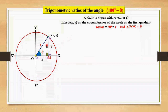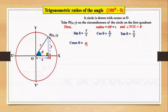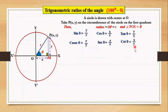Now let's write all the trigonometric ratios for the angle theta: sin theta equals y by r, that is y-coordinate of P by r, and cos theta is x by r, tan theta is y by x. Similarly, the reciprocal of sin theta, that is cosec theta equals r by y, sec theta is r by x, and cot theta is x by y.